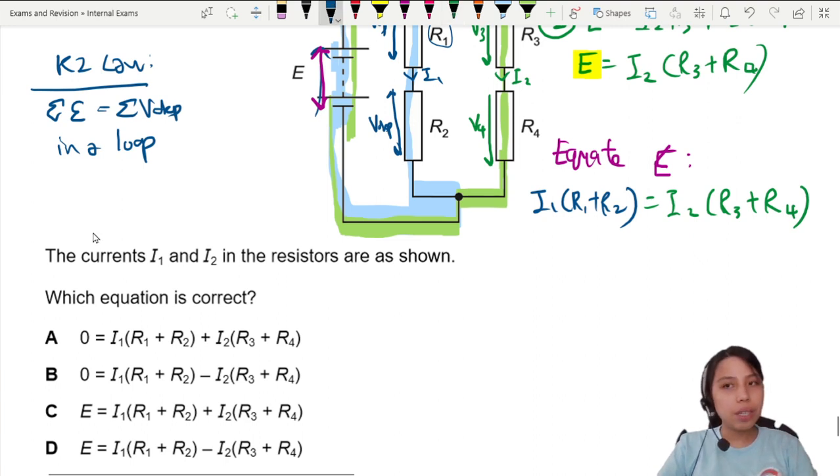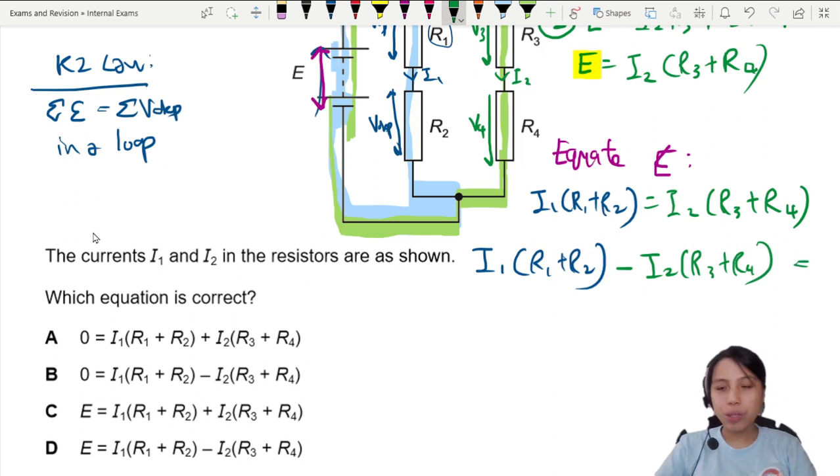But you see the question - the answers are all in terms of zero. So we move everything a bit. This one is I1(R1 + R2) minus I2(R3 + R4) equals zero.